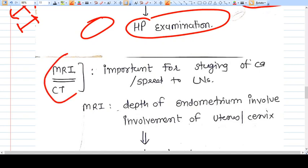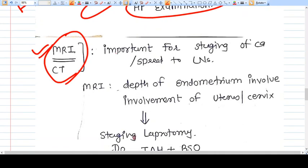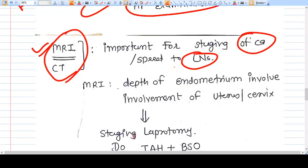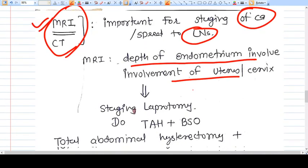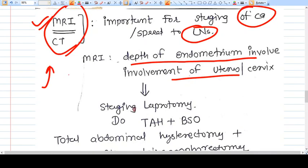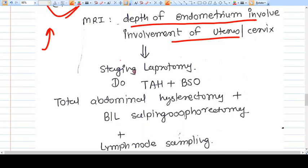MRI is preferred here. MRI actually gives the spread of carcinoma into the myometrium and to the lymph nodes. Depth of the myometrium involved is seen in MRI, so it's good to go for MRI. In CT you can actually scan other organs also. Now once the carcinoma is confirmed.